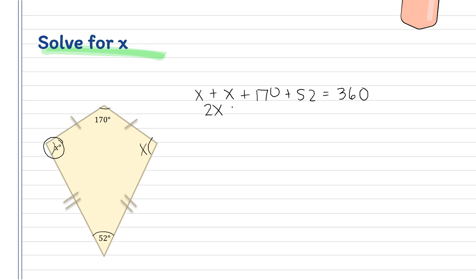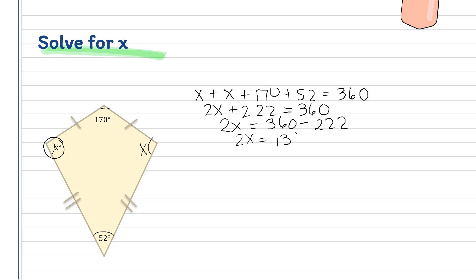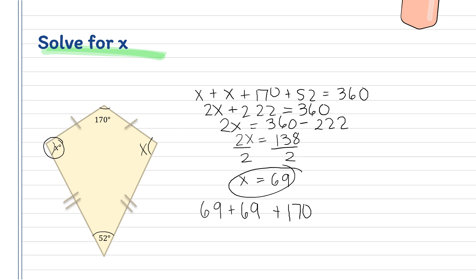So 2x + 222 = 360. Then 360 − 222 = 138, and 138 ÷ 2 = 69. Therefore, our angle is 69 degrees. Let's verify: 69 + 69 + 170 + 52 = 360. Therefore, our answer is correct.